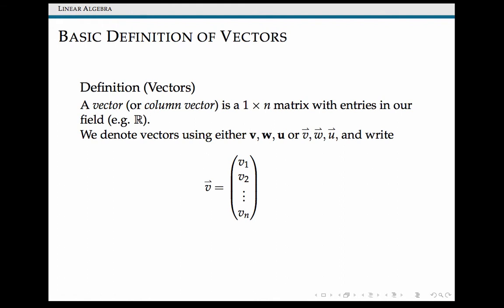The way that we distinguish a vector from a scalar, which was just a constant in our field, is by using either bold-faced letters or a letter with a little arrow over top. So if we've got a vector with n entries in it, we write it as sitting inside R^n, vectors sitting inside of an n-dimensional space.